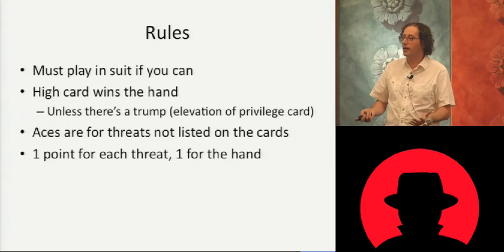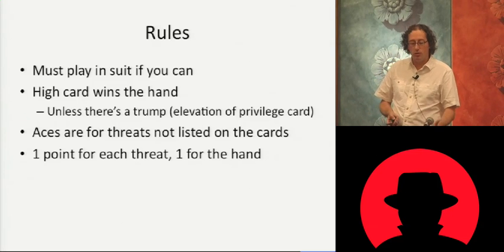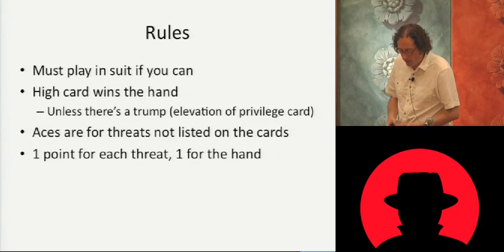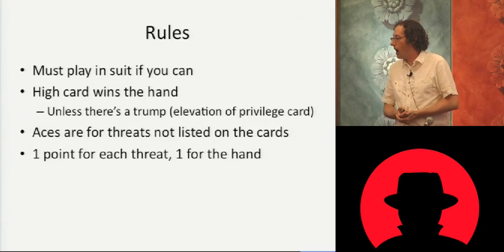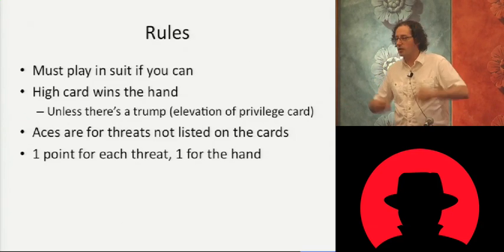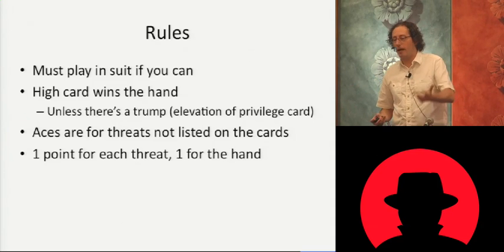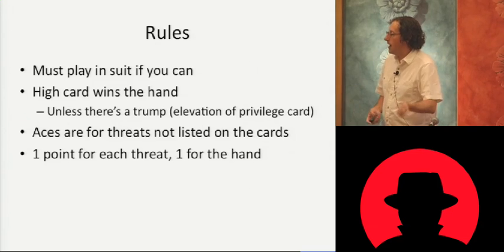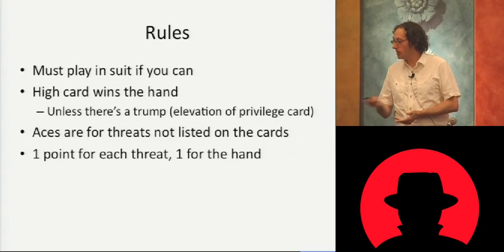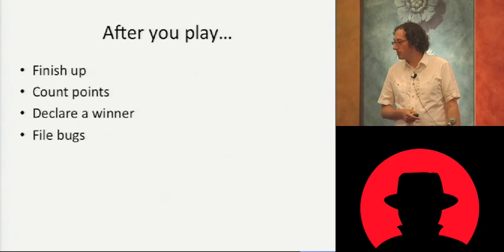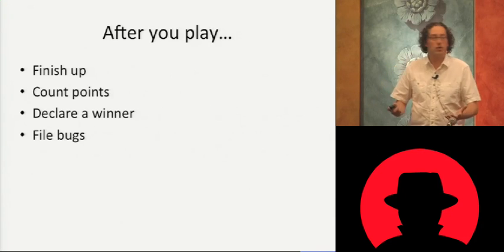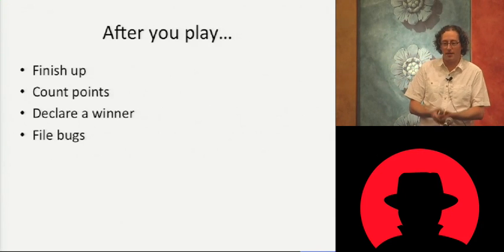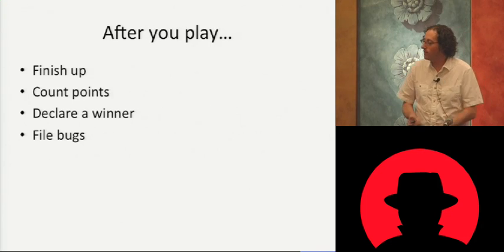Some rules: you play in suit if you are able to. The high card wins the hand unless there's a trump card — an Elevation of Privilege card. We encourage brainstorming through aces: the aces say you've invented a threat not in the deck. You give people a point for each threat and a point for the hand. After you finish, you count points, declare a winner, give them a little toy or something, and file bugs.